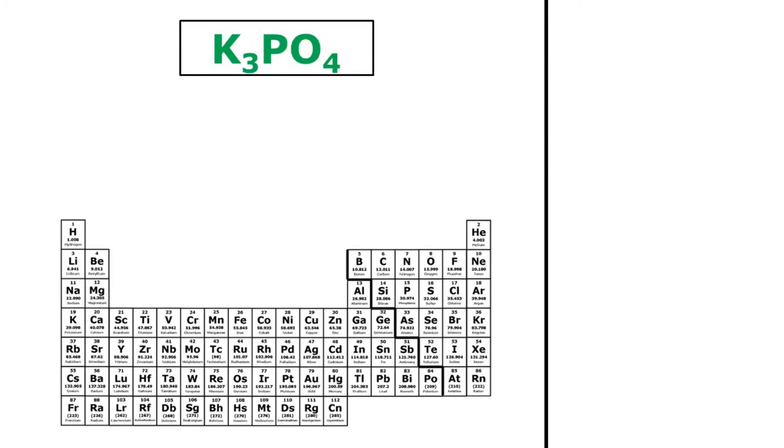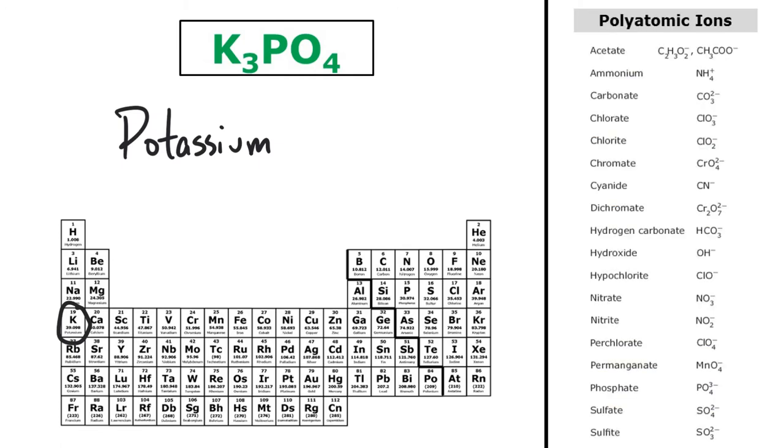Here I have K3PO4. So K is my metal, that's potassium. So I'll just write the name of my metal without changing it. But PO4 is obviously more than one element. I have more than one capital letter there, so that tells me that I'm looking at a polyatomic ion. So when I look at my list of polyatomic ions, I can see that I'm looking at phosphate. So all I have to do is just write the name of the polyatomic ion that I see. So the name of this ionic compound is potassium phosphate.